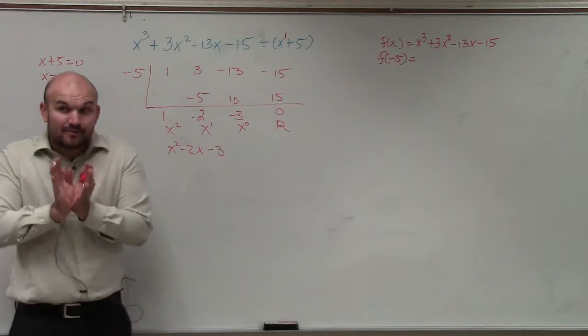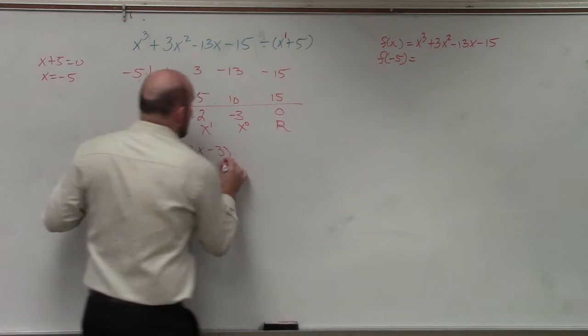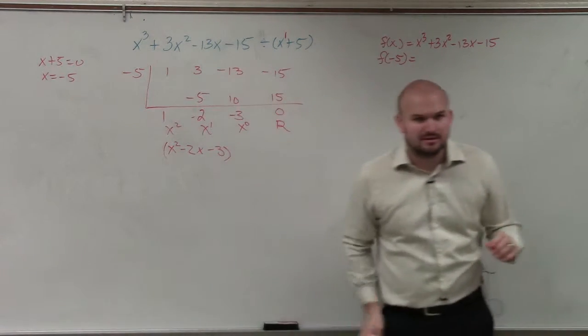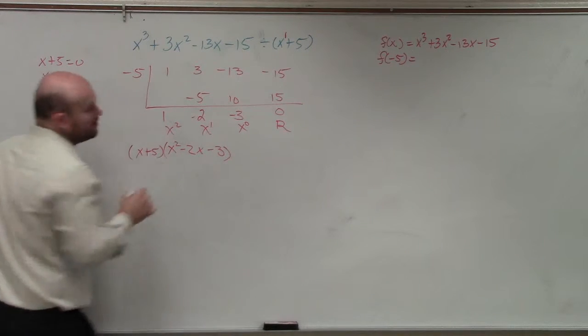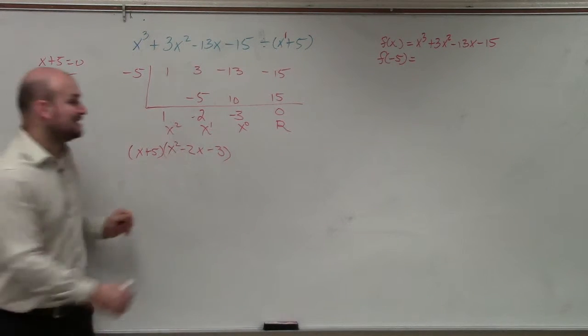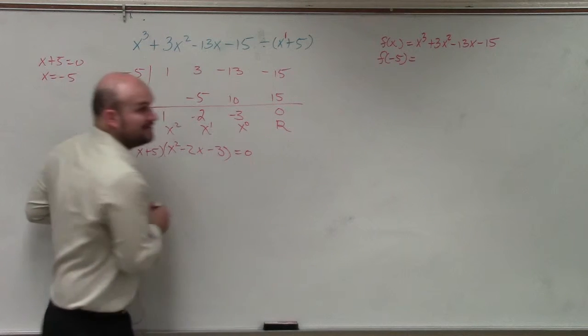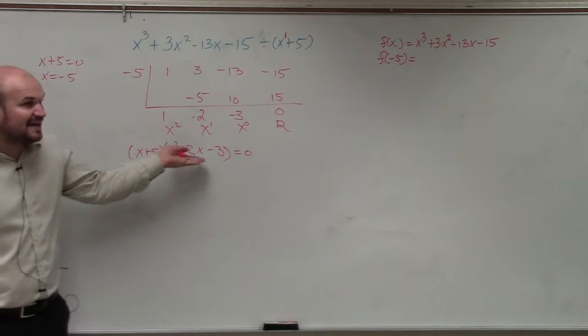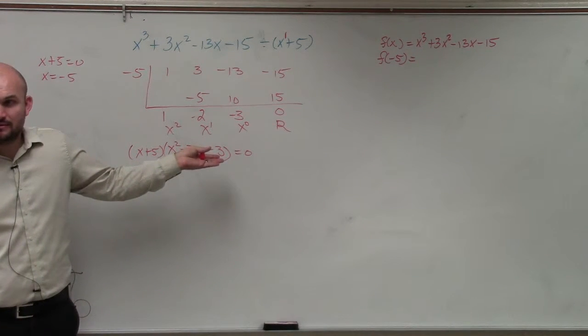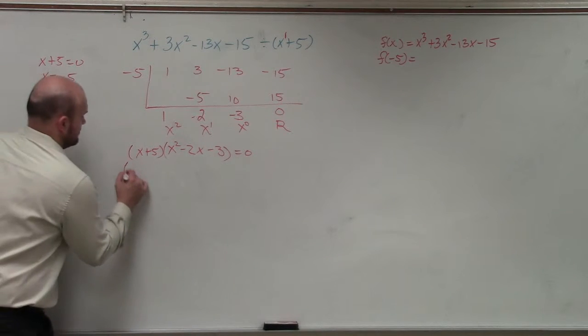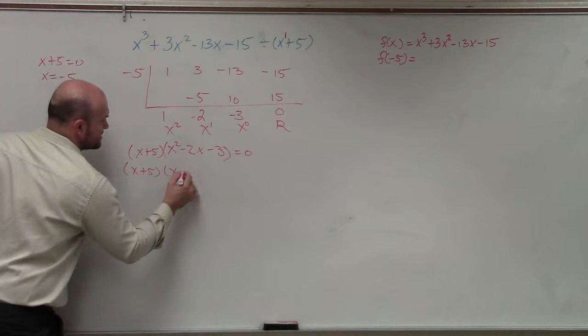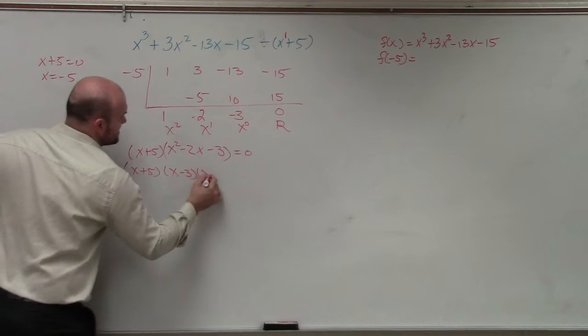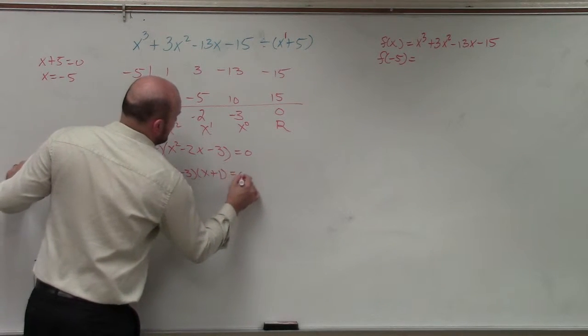Now again, as I wanted to tell you guys, if this is a factor, what was my other factor? x plus 5. Now, is it totally possible if I said find all the solutions, that I could set my factors equal to 0, right? Then can I continually factor these? Yeah. I could factor this down further into x minus 3 times x plus 1 equals 0.